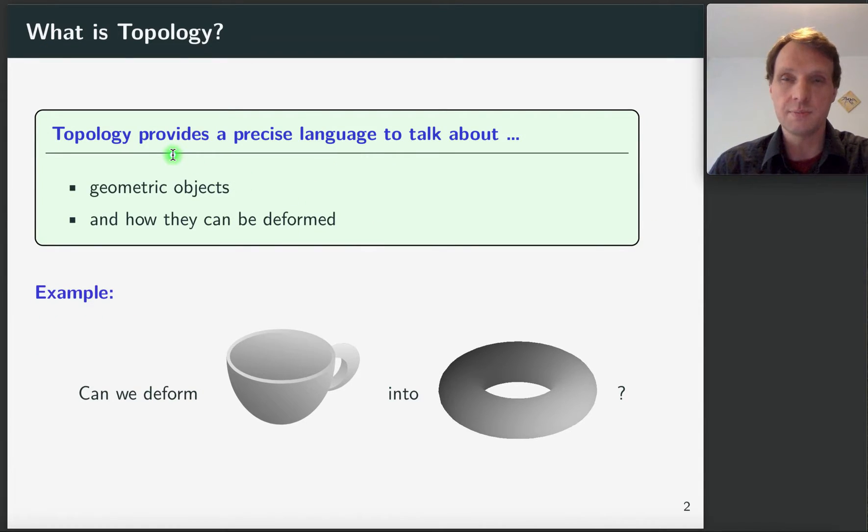Topology provides a precise language to talk about geometric objects and the way they can be deformed. An example question in topology is shown here. Can we deform the surface of this coffee cup into the surface of the doughnut?